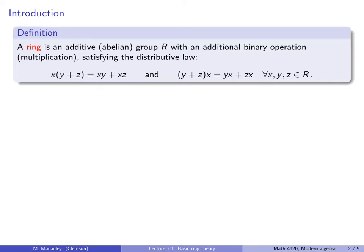Anytime we use addition in a group, it is understood that the group is abelian. The plus symbol could be used for addition modulo n, plain old addition, adding matrices, or adding functions. Think of a ring as a group under addition where we're also allowed to multiply elements together. Multiplication could mean multiplication of numbers, matrices, or even function composition.